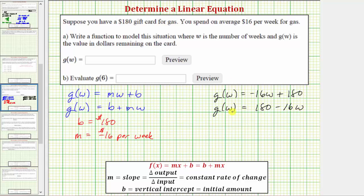And it probably makes a little bit more sense to write the function g(w) in this form here, where the value of the card is equal to $180 minus $16 times the number of weeks. So let's enter g(w) = 180 - 16w.